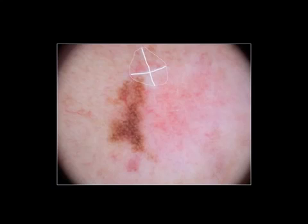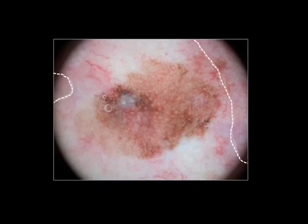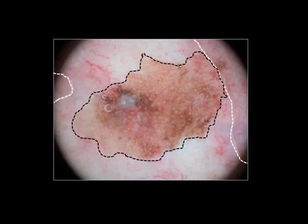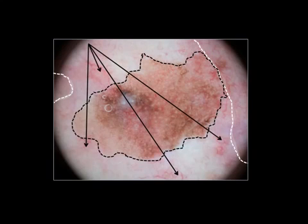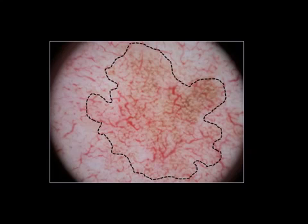Again in this lesion, which was very regressive on histopathology, we can see at the borders that the vessels are very different — much denser inside than outside. Again in this case the vessels are different: outside arborizing and not in focus, and densified in a different shape inside. However, this does not apply to every case — in some cases the vessels are exactly the same outside and inside the lesion.